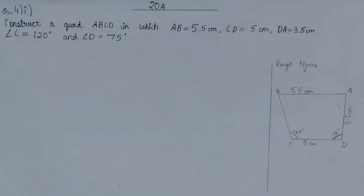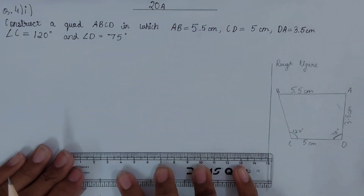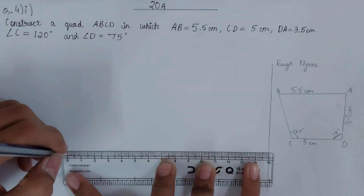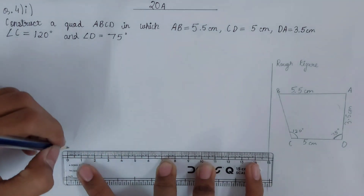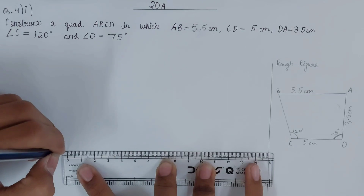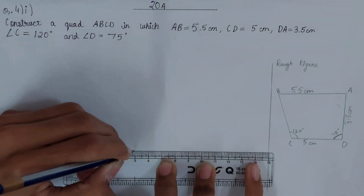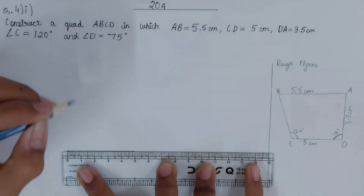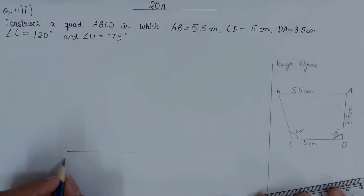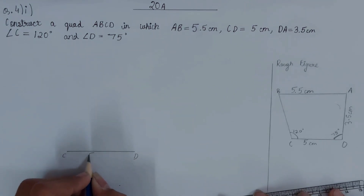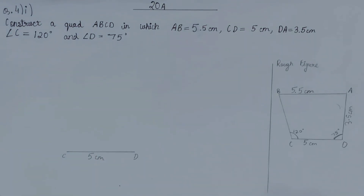First, take your ruler and draw line segment CD of 5 centimeters — from 0 to 5. Label the endpoints C and D. This is your base line CD of 5 centimeters. It's best to do the labeling at the end to avoid errors.